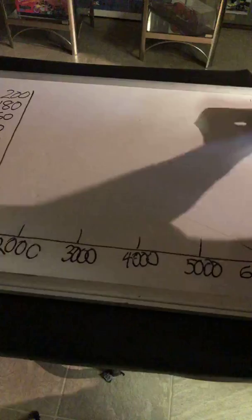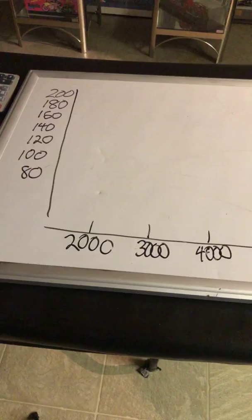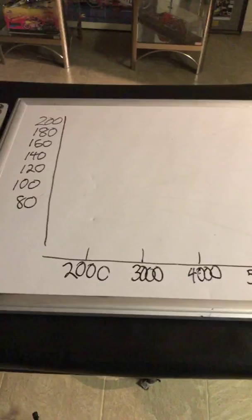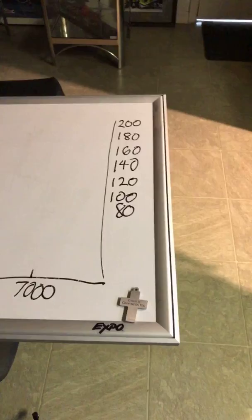I want you to get a grasp of this dyno sheet I drew here. I've got 80 horsepower all the way up to 200 horsepower, and 2,000 RPM all the way to 7,000 RPM. The torque and horsepower curve is on the same axis. Before I go any further with that idea, I want to share with you about area under the curve.